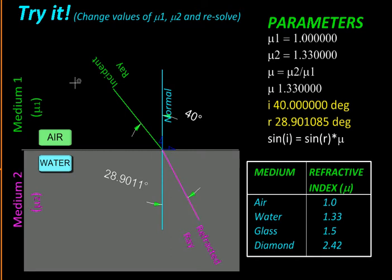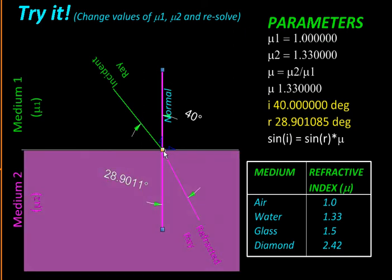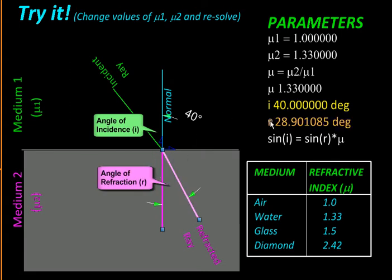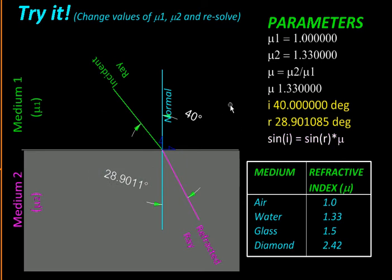We'll call this the refracted ray. To study the relationship between them, we'll use a perpendicular drawn to the boundary at the point of incidence — this is called the normal. There is a relationship between the angle made by the incident ray with the normal, called the angle of incidence (40 degrees here), and the angle made by the refracted ray with the normal, called the angle of refraction. The ratio of the sine of these two angles is always a constant for a given pair of media.